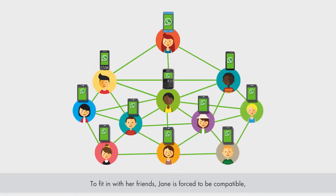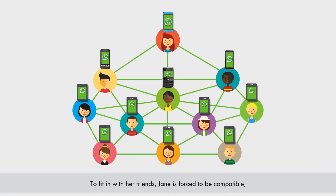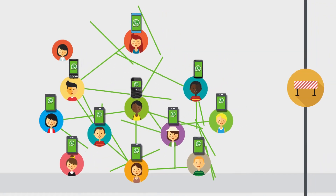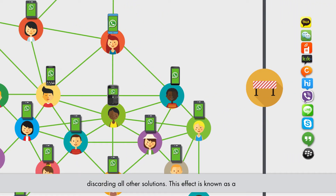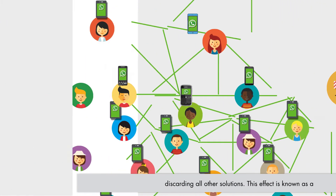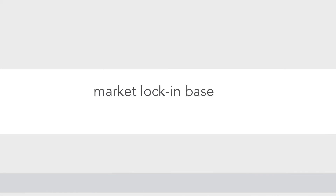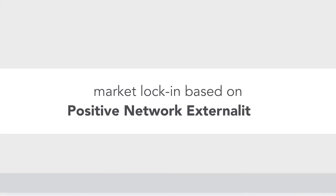To fit in with her friends, Jane is forced to be compatible, discarding all other solutions. This effect is known as a market lock-in, based on positive network externalities.